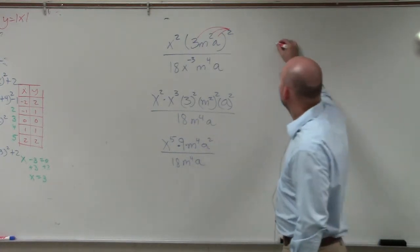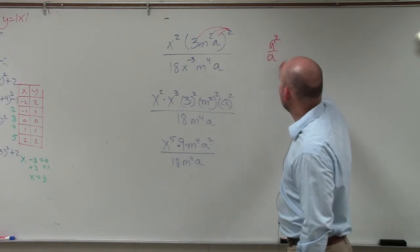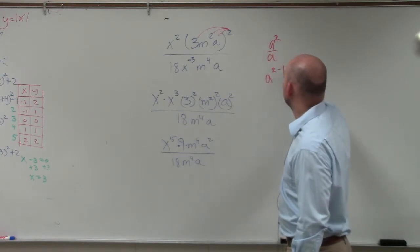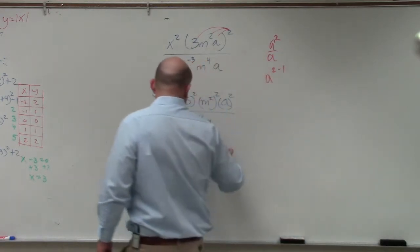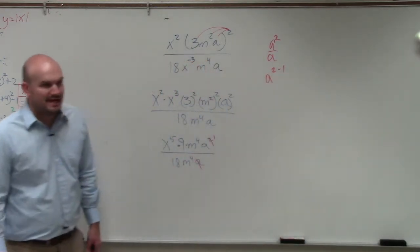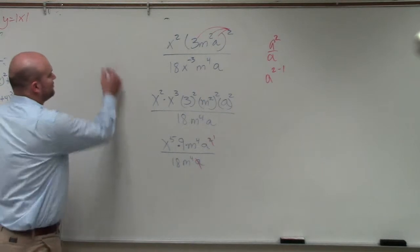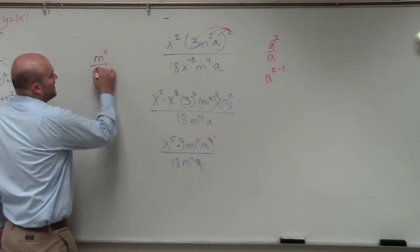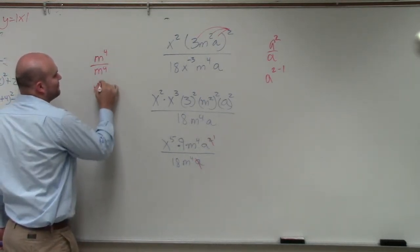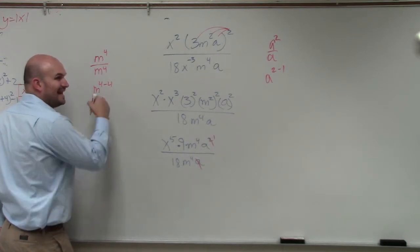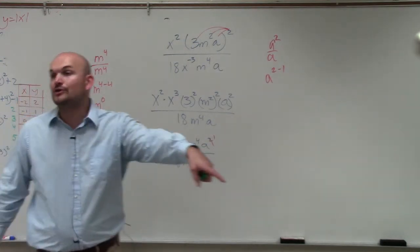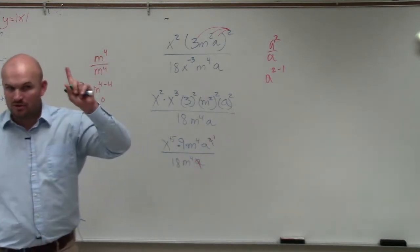So in reality, this is a squared divided by a is really a to the 2 minus 1, which is just a, right? So that just leaves you with an a. However, m to the fourth divided by m to the fourth is m to the fourth minus 4, which is equal to m to the 0. Anything raised to the 0 power on your rules of exponents is equal to 1.